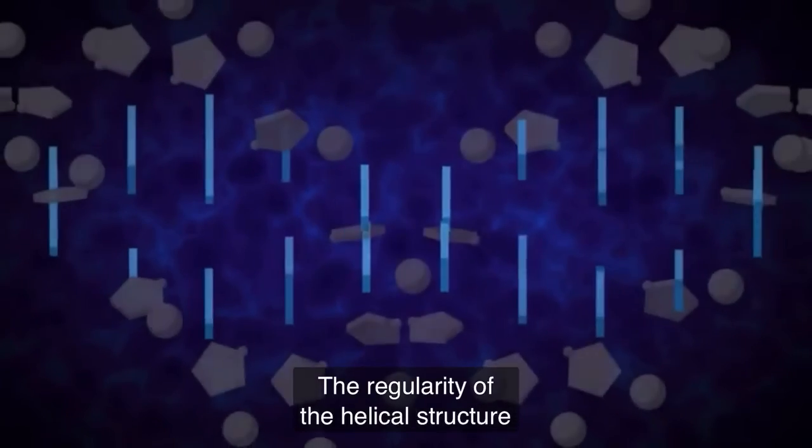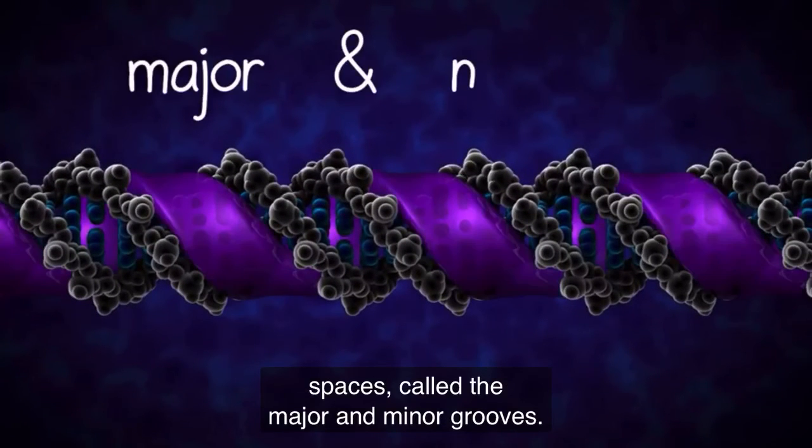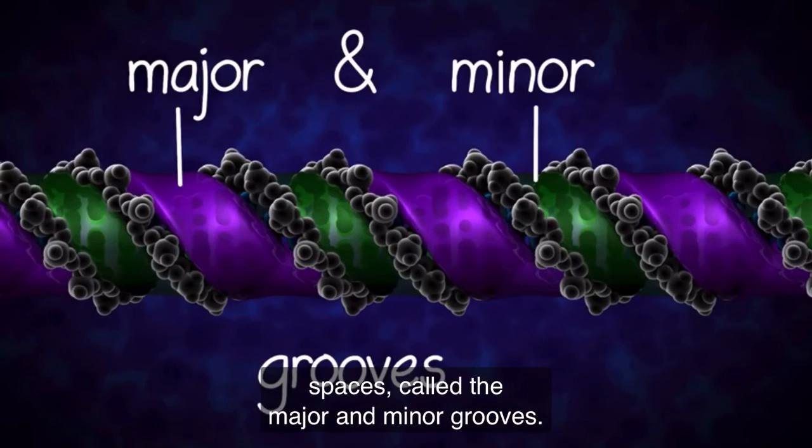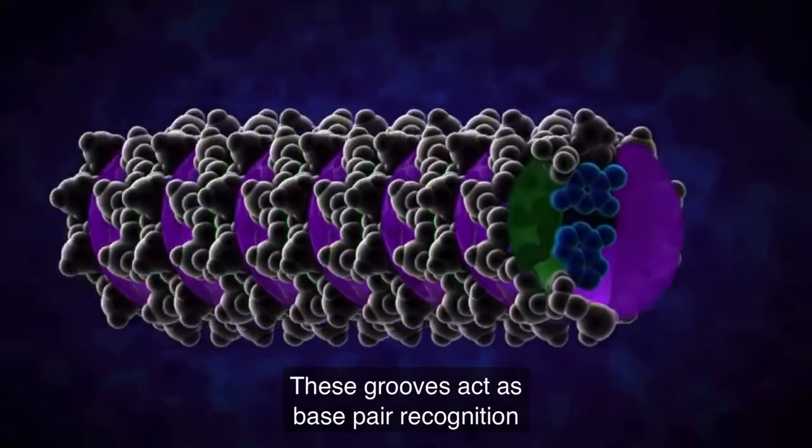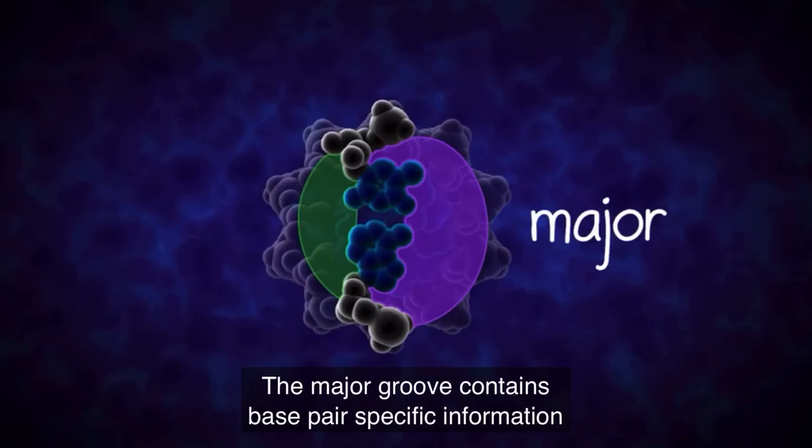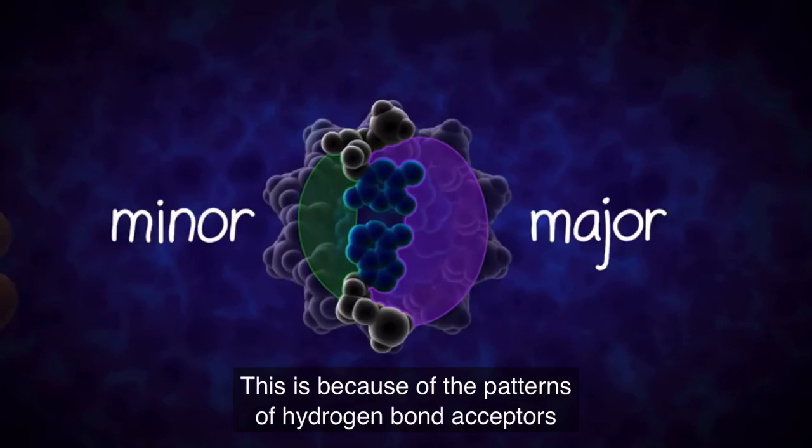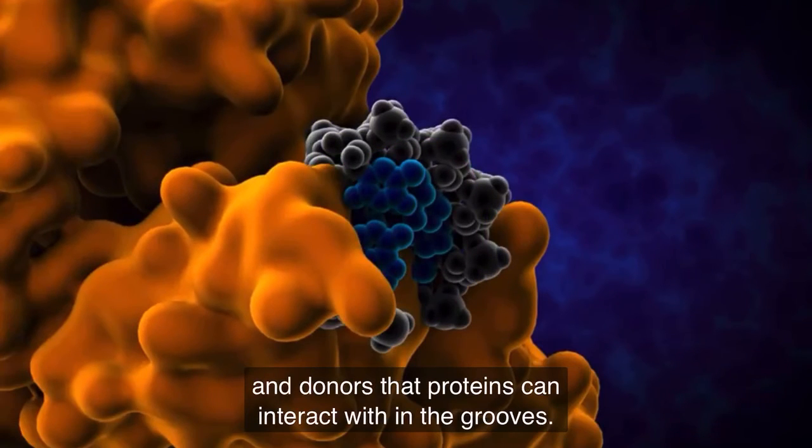The regularity of the helix structure forms two repeating and alternating spaces called the major and minor grooves. These grooves act as base pair recognition and binding sites for proteins. The major groove contains base pair specific information, while the minor groove is largely base pair nonspecific. This is because of the patterns of hydrogen bond acceptors and donors that proteins can interact with in the grooves.